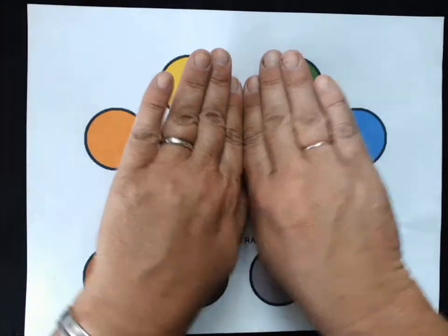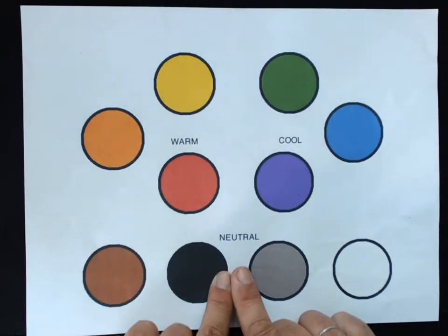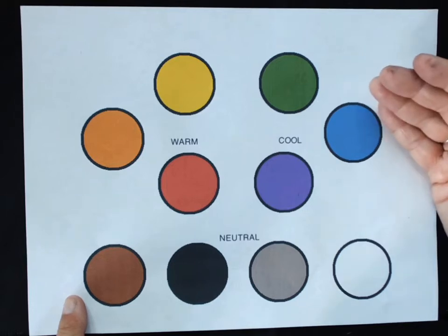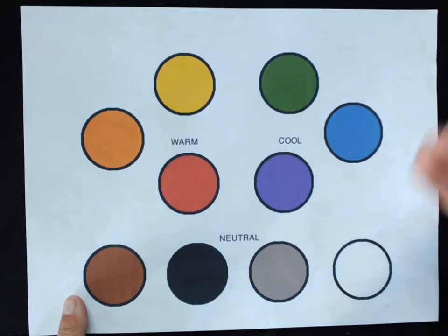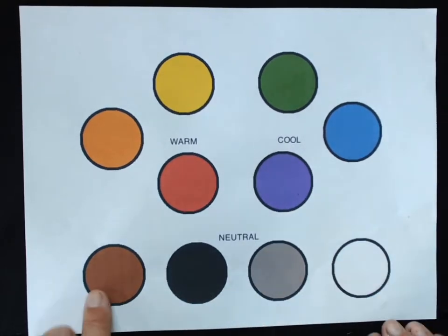Those kind of divide up our color wheel. Now what's not on our color wheel is our neutrals, and these are sometimes used to add to our warm and cool colors to change them, make them lighter, make them darker, make a tone, but these are not on our color wheel.